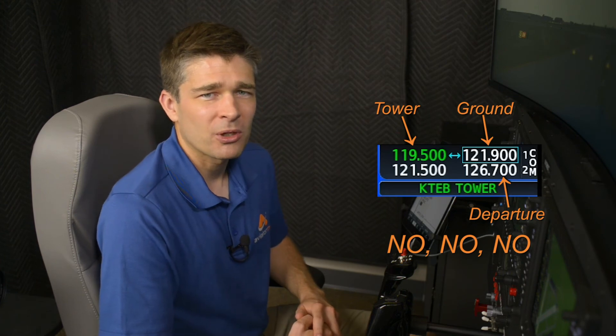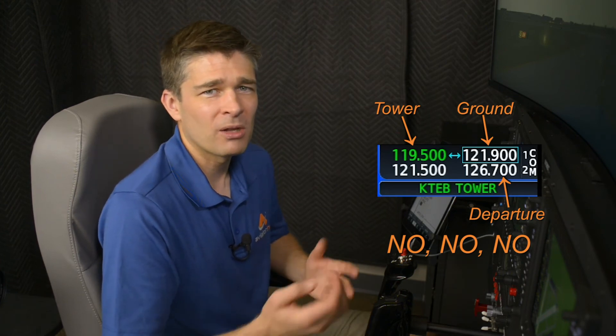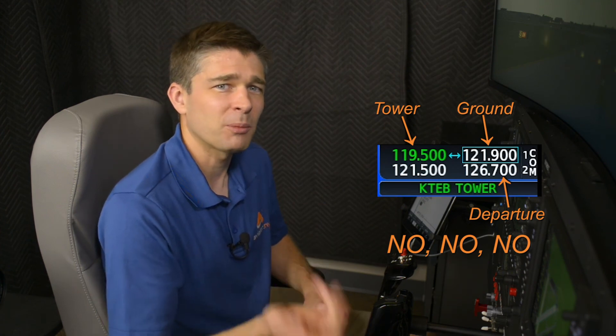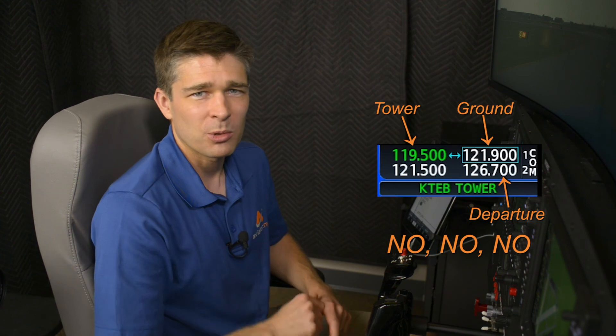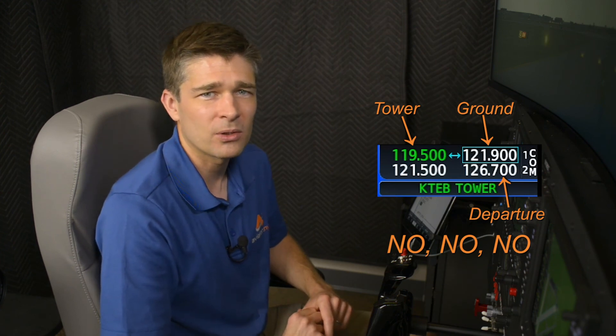Here are some common errors we see in radio setup technique. The most common one is not having the next frequency in the progression of the flight ready in the standby. One example would be forgetting to set the departure frequency after you switch to tower, so you flip back to ground when tower tells you to call departure. Another common error is having departure queued up on radio two, which ends up being a lot of button pushing — you have to flip the frequency to active in number two and then manipulate the audio panel to switch which radio you're talking on.